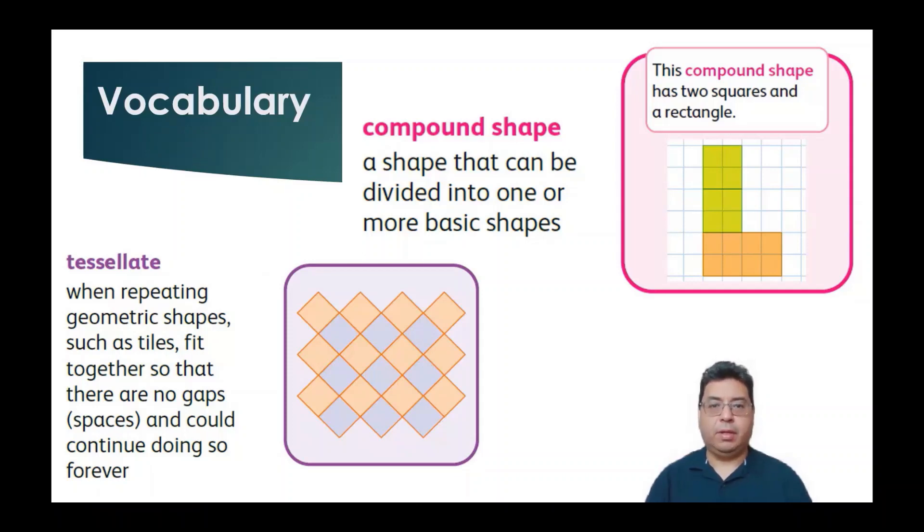The two vocabulary words that we're going to look at today are compound shape, which is a shape that can be divided into one or more basic shapes. As you can see here, I got these shapes here. I've got a couple of squares and a rectangle, or based on how you interpret it, they can be rectangles or squares, as an example.